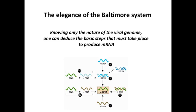This is really an elegant system. All you have to know is what kind of genome is in the virus, and then you can tell all the steps that have to be taken to get to mRNA. When a virus brings a genome into the cell, making mRNA is what it has to do to initiate the infectious cycle. If you can remember this scheme, you'll be able to trace it — and that's really a lot of what we want you to know in this course.